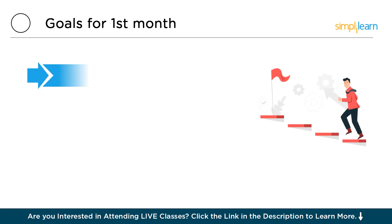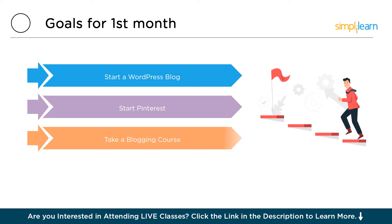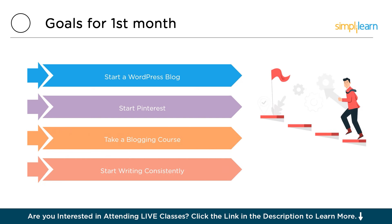Here are the goals for your first month. Start a WordPress blog — WordPress is a powerful and flexible platform offering a wide range of themes and plugins to design your site, enhance functionality, and optimize for search engines. Start Pinterest by creating an account specifically for your blog, using it to share content, engage with your audience, and drive traffic. Also consider enrolling in a blogging course to sharpen your skills and learn SEO and monetization strategies — there are many free and paid courses available that can provide valuable insights and accelerate your success.